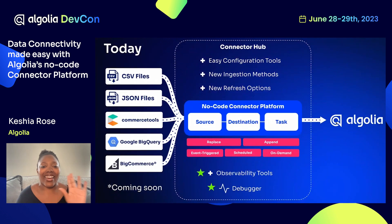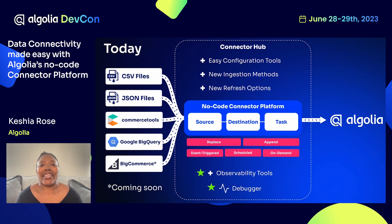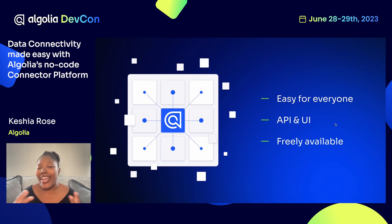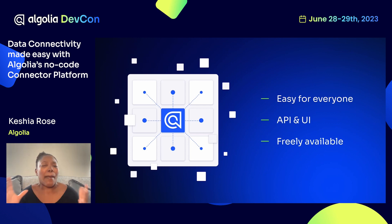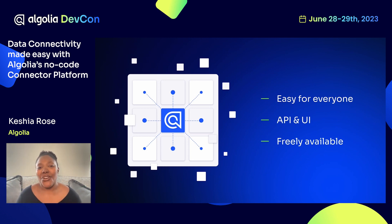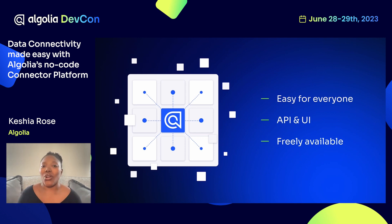We've got our brand new observability tools with our debugger, and as you can see, we've really expanded on the platform we showcased last year — and we're going to continue to expand on it. Overall, we want to make it as easy as possible for anyone and everyone, whether you're a non-technical user, a developer, or somewhere in between. Everything I showed you today is available in the UI I demonstrated. But every single step, every button I pushed, every capability is also backed by APIs first as well. So however you want to interact — through code, using API requests, or using the user interface — it's there for you. And all of this is freely available; if you have an Algolia account, you can use these connectors for free.